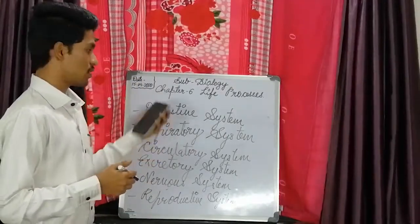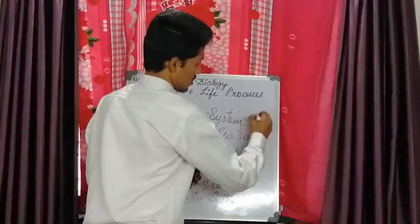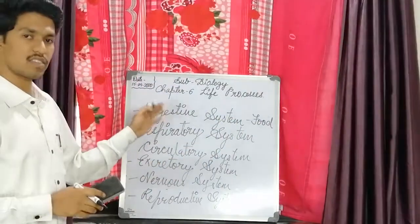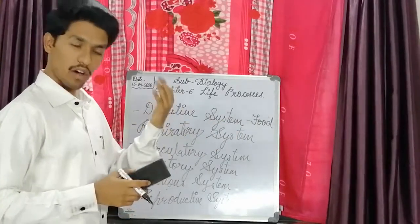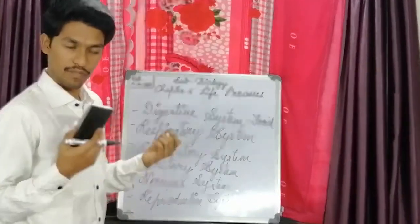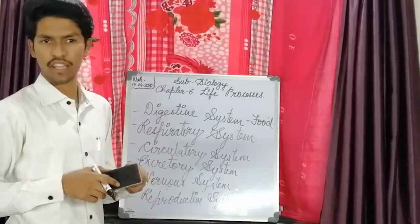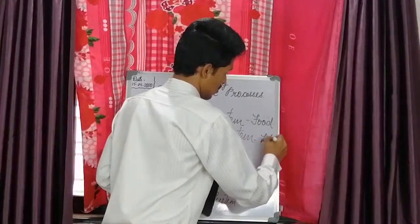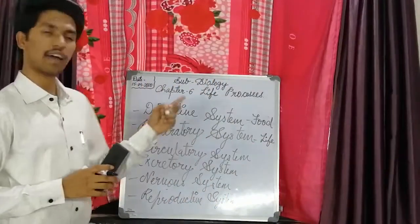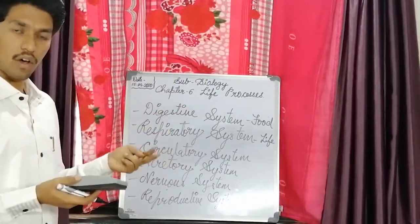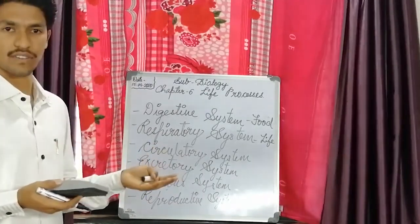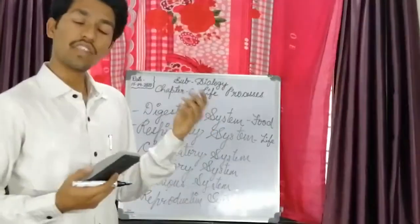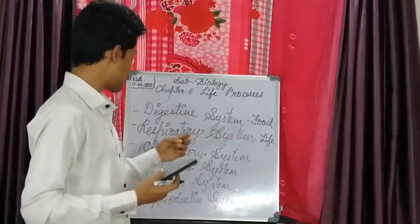We are going to see in this chapter the different life processes taking place in our body day to day. Now, the digestive system — the best word suitable for digestion is food. Taking in food, getting energy, and that energy is utilized by the different parts of our body, so we can perform our daily activities. Next is the respiratory system. When we take in oxygen and release carbon dioxide, there is inhalation and exhalation — that is respiration. Without breath, we cannot survive. That's why I have written 'life.'